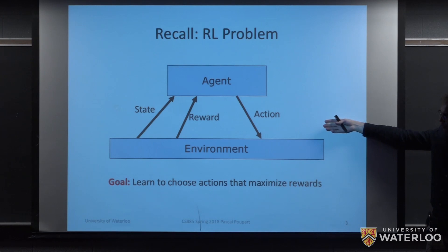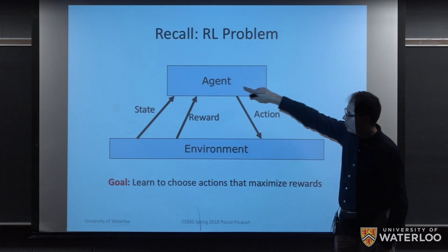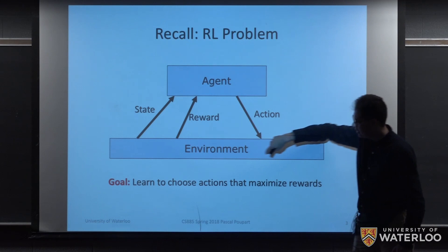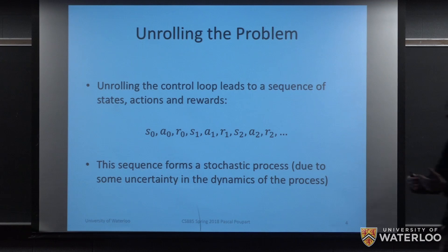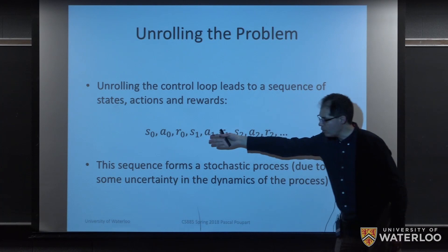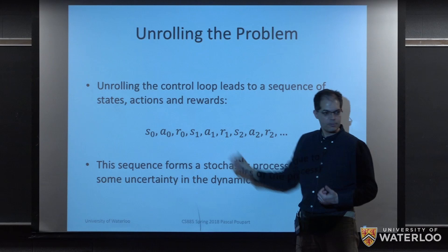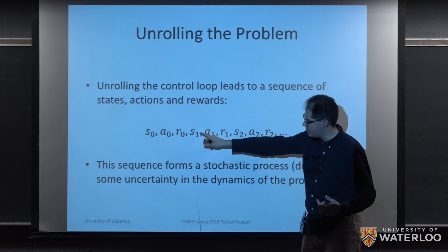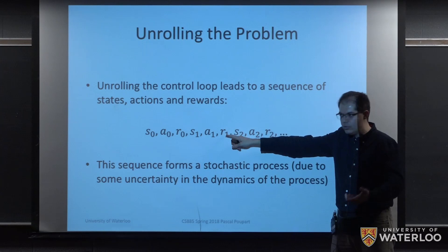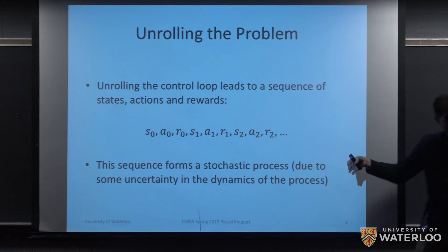As a quick recall, this is our abstract representation for reinforcement learning. This essentially encodes a feedback loop where an agent executes an action, then the environment provides a state and a reward, then there's an action executed, state and reward, and so on. If we unroll the problem over time, what we would observe is that at a certain time step the environment is in some state, then the agent executes an action, and then a reward is provided. Then there's going to be another state that results from the action taken, then the agent will take a new action, there will be a new reward provided by the environment, and so on.